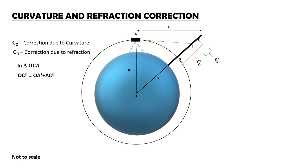Just split OC as OB plus BC. Hence, OB plus BC the whole square is equal to R square plus D square. Here, OA is directly taken as radius, as height of instrument is negligible compared to earth surface.